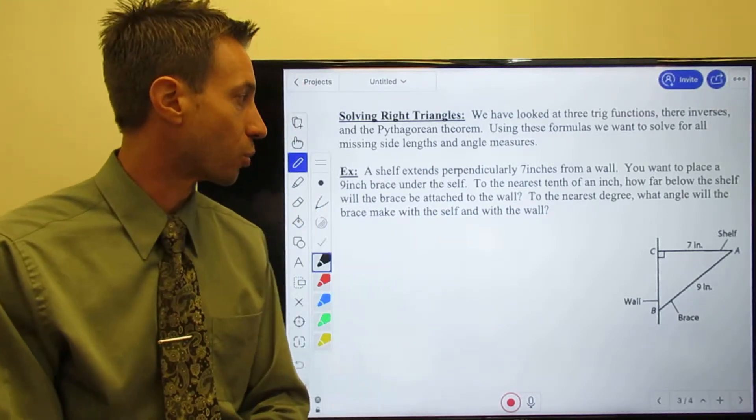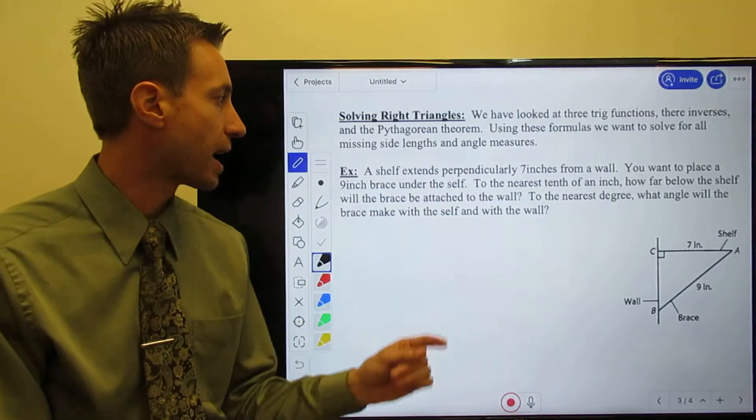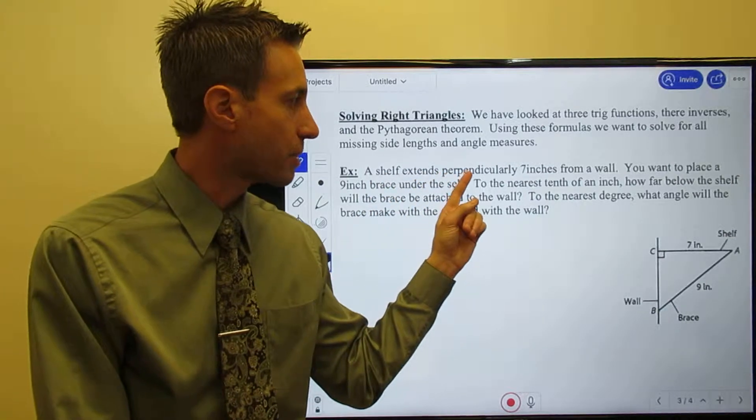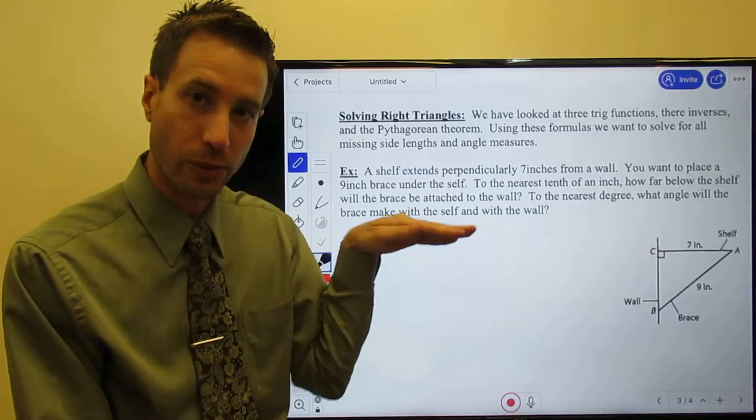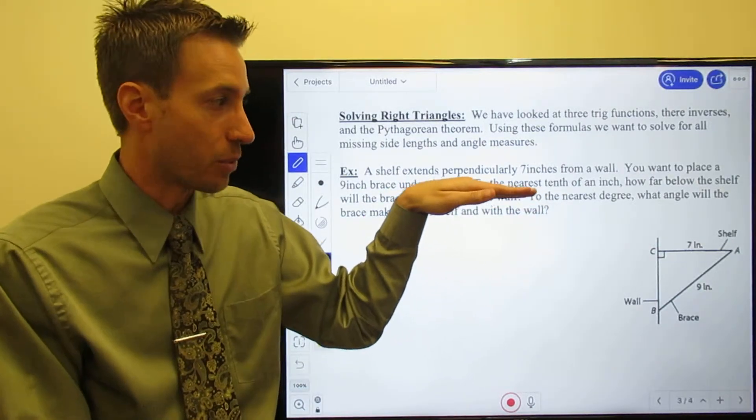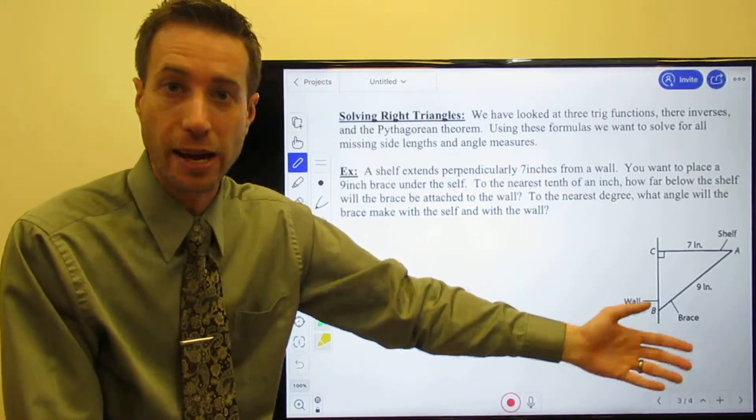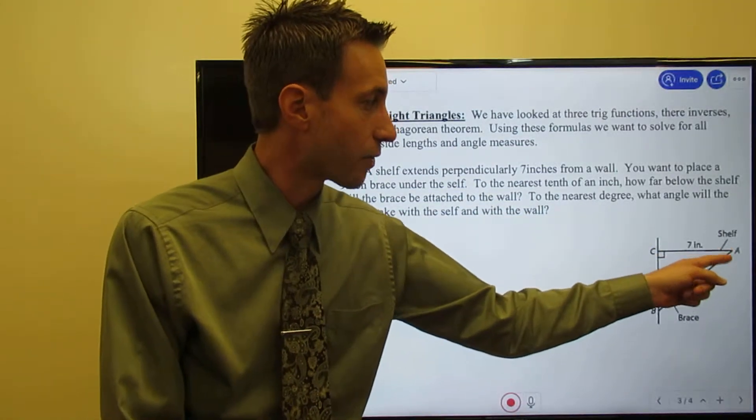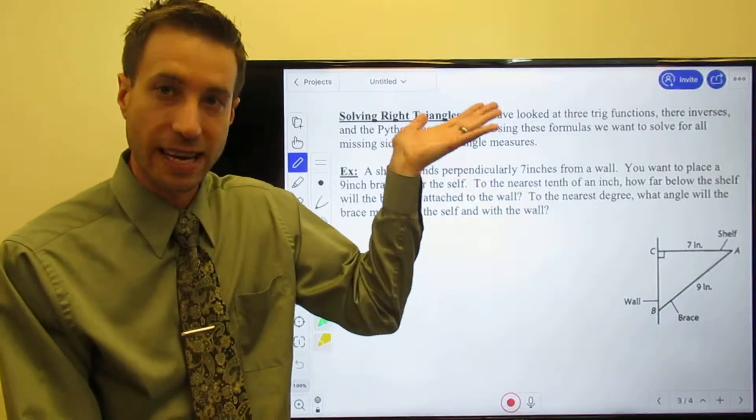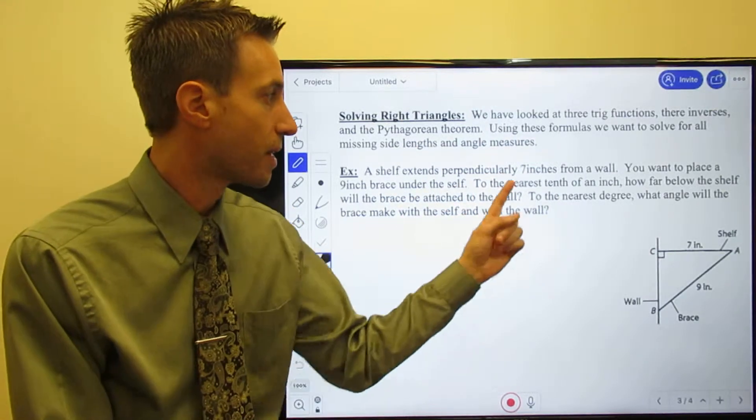Here's the problem: a shelf extends perpendicularly seven inches from a wall. There it is - it's a right triangle. We want our shelves to be flat so that when you set something on the shelf it doesn't just slide off onto the floor. The shelf extends seven inches from the wall and it's perpendicular, so it's flat and stuff sits on it without falling off.